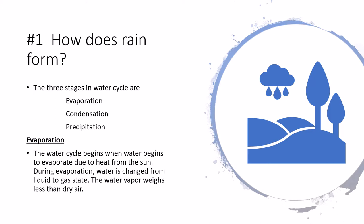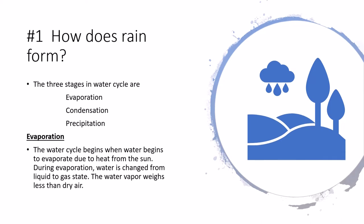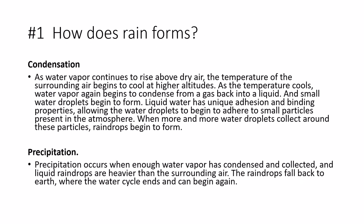The water vapor weighs less than dry air. As water vapor continues to rise above dry air, the temperature of the surrounding air begins to cool at higher altitudes. As the temperature cools, water vapor again begins to condense from a gas back into a liquid, and small water droplets begin to form.